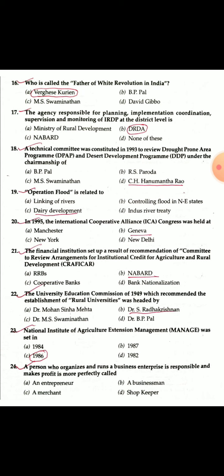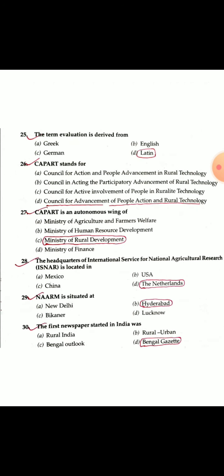Question 23: The National Institute of Agricultural Extension Management (MANAGE) was established in 1986. Question 24: A person who organizes and runs a business enterprise, takes responsibility and manages resources — this person is called an Entrepreneur.